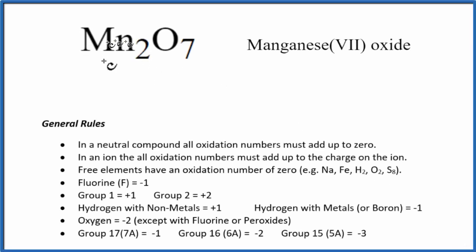To find the oxidation numbers for each element here in Mn2O7, that's manganese 7 oxide, we'll use these rules here.